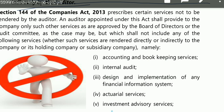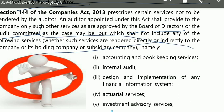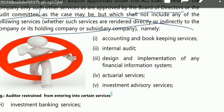Section 144 of the Companies Act states: an auditor appointed under this act shall provide to the company only such other services as are approved by the Board of Directors and Audit Committee, as the case may be. But even if the BOD approves, if the service is rendered directly or indirectly, the auditor will be disqualified. Who renders accounting and bookkeeping services? If the auditor does the accounting and bookkeeping, there is a self-interest threat.